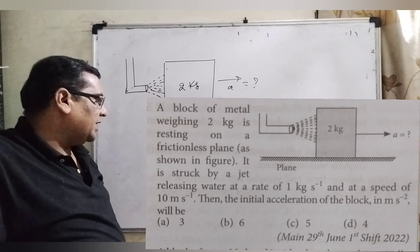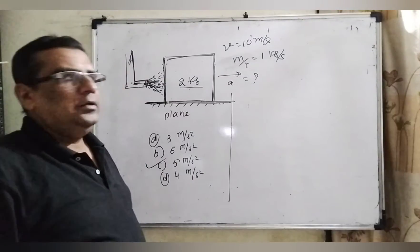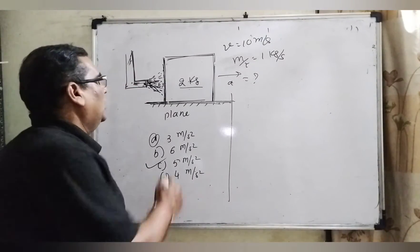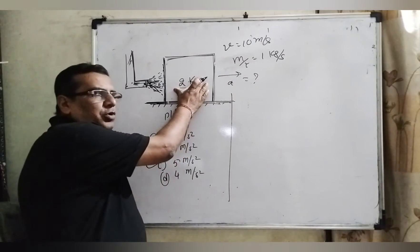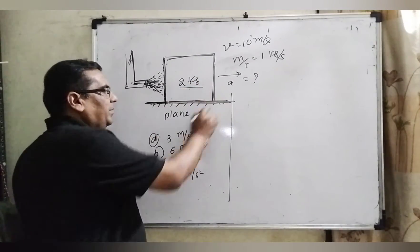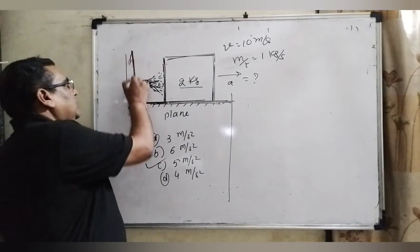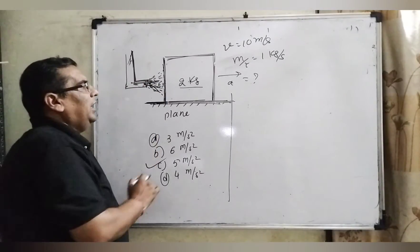C) 5 meters per second squared, and D) 4 meters per second squared. Here we have a block having 2 kilograms mass which is kept on a plane. Here is a jet releasing water